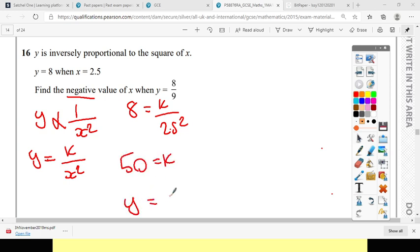So my equation is Y equals 50 over X squared. It's important to write that because that's going to be a mark.